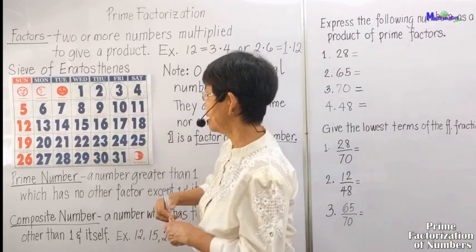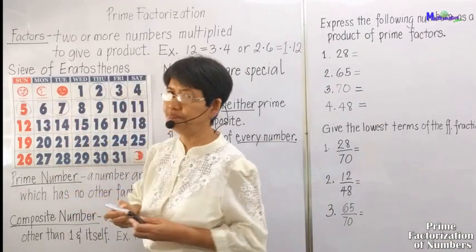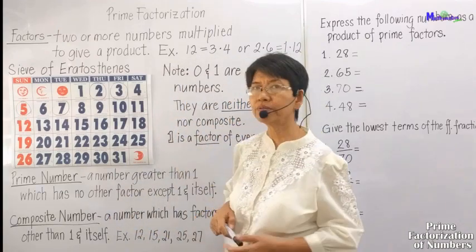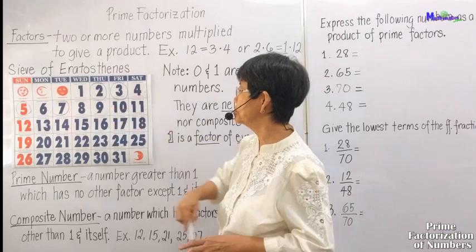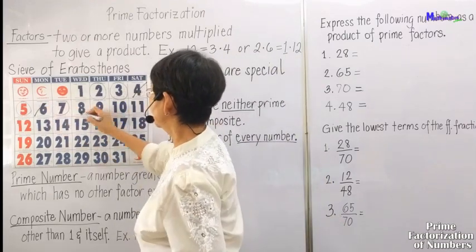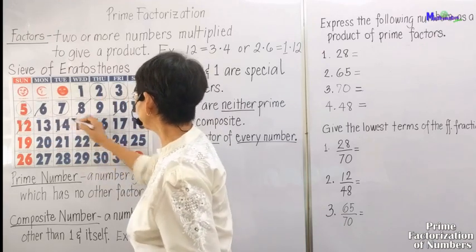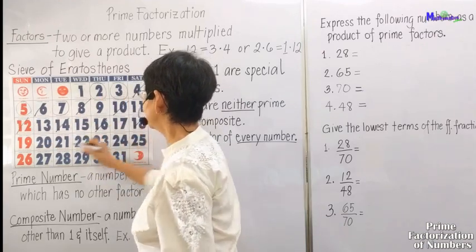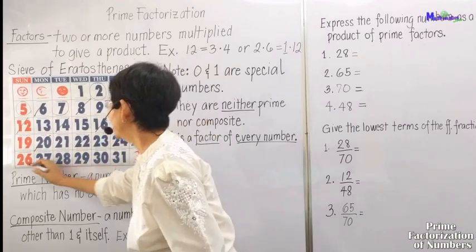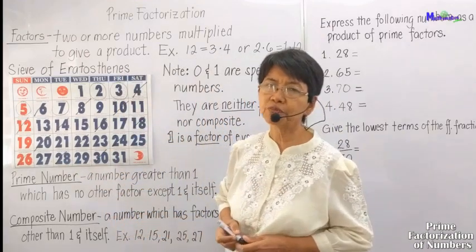First, you encircle the first four prime numbers: 2, 3, 5, and 7. Next, we cross out all the numbers divisible by 2 — so all the even numbers: 12, 14, 16, 18, 20, 22, 24, 26, 28, and 30.